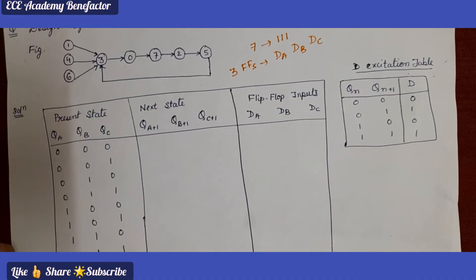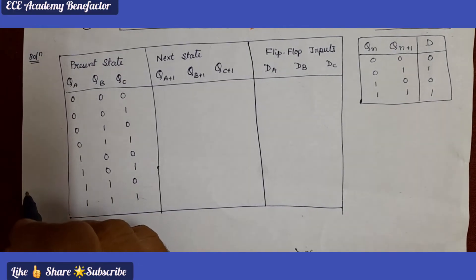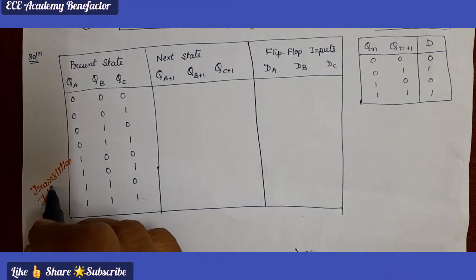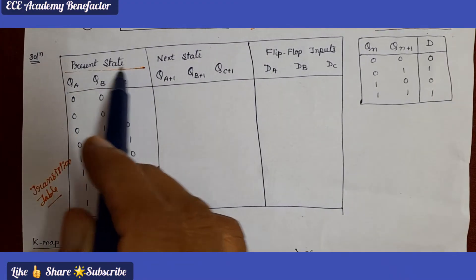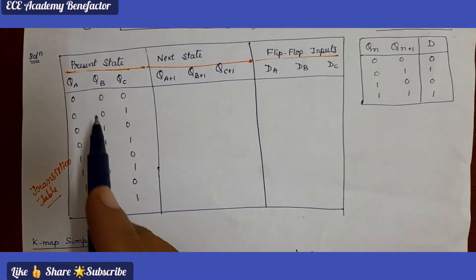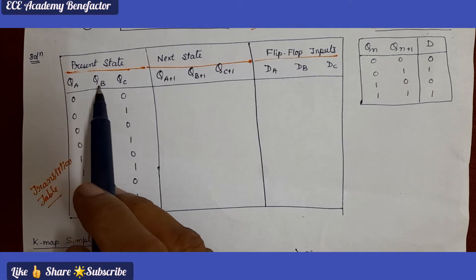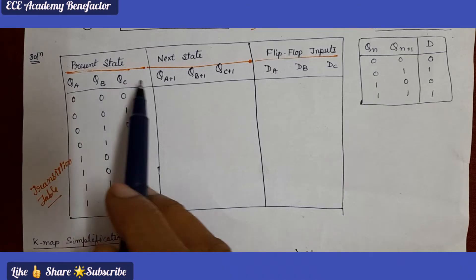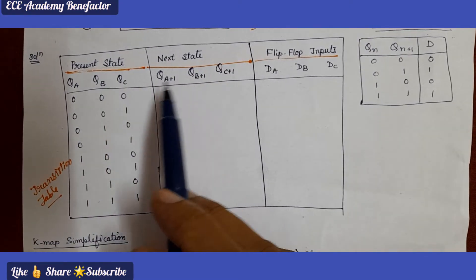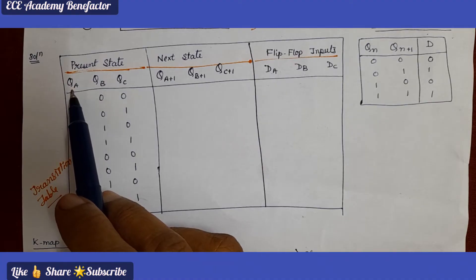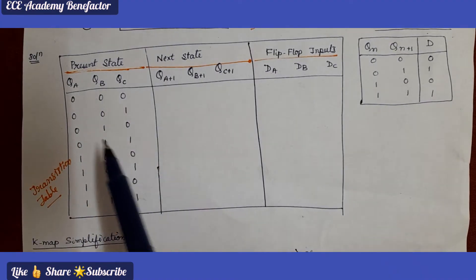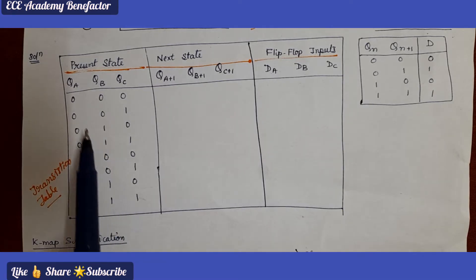Now let us start the solution. First we need to draw the transition table, which comprises of present state, next state, and flip flop inputs. The present state columns are QA, QB, QC. Next state columns are QA+1, QB+1, and QC+1. For 3 variables we can write a total of 8 combinations starting from triple 0 to triple 1, in the sequence 0, 1, 2, 3, 4, 5, 6, 7.